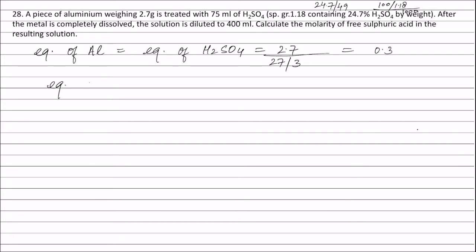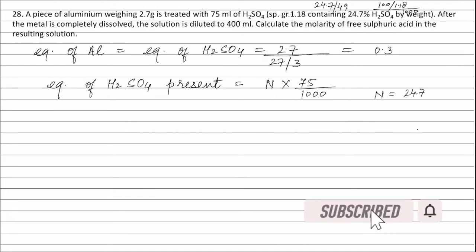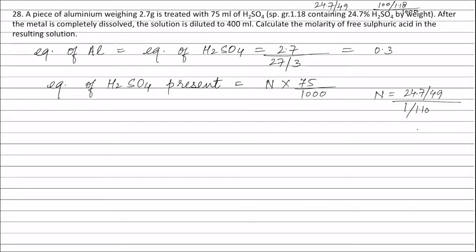Equivalents of sulphuric acid present = normality of sulphuric acid solution × volume of sulphuric acid (75/1000 litres). Normality of sulphuric acid = equivalents of sulphuric acid (24.7/49) divided by volume of solution in litres (1/1.18 × 10 litres).